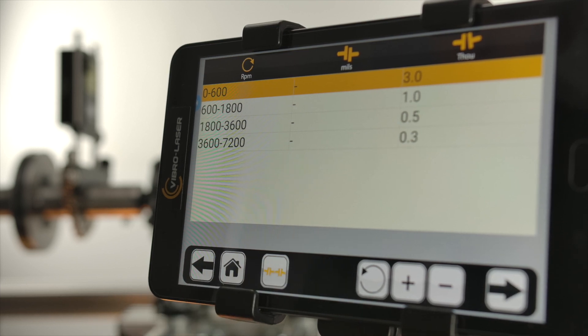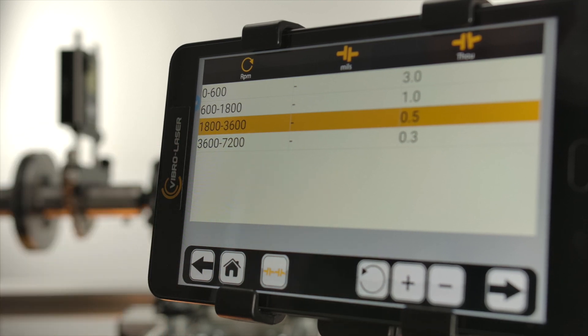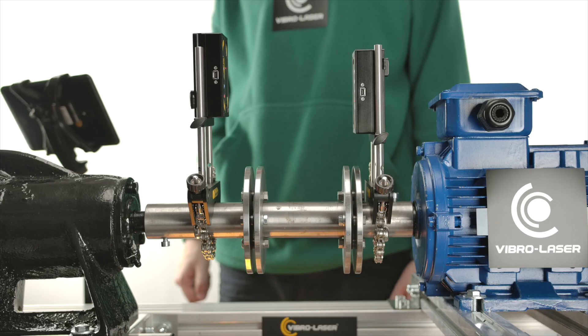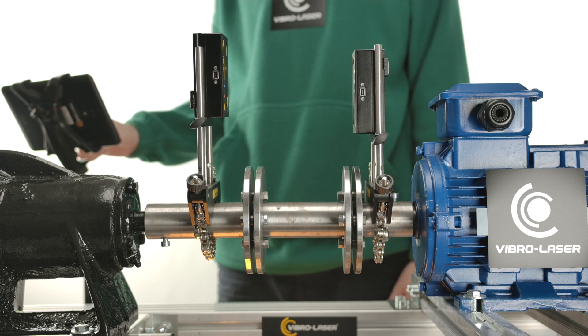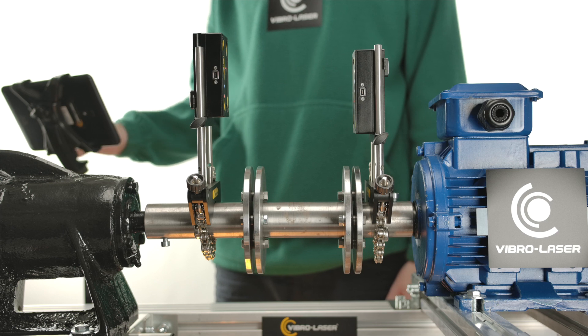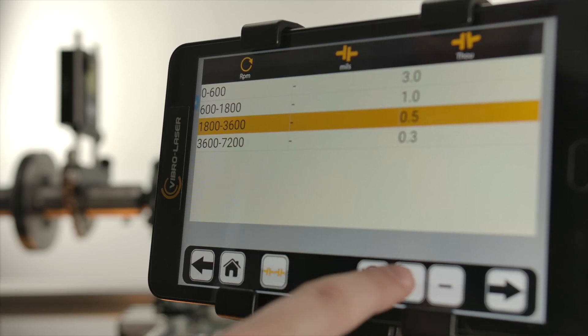After that, you will be presented with different tolerance tables suitable for the associated coupling. You can select in the table the tolerance value that corresponds to the machine speed or enter a custom tolerance value. To do this, you need to tap the plus icon.